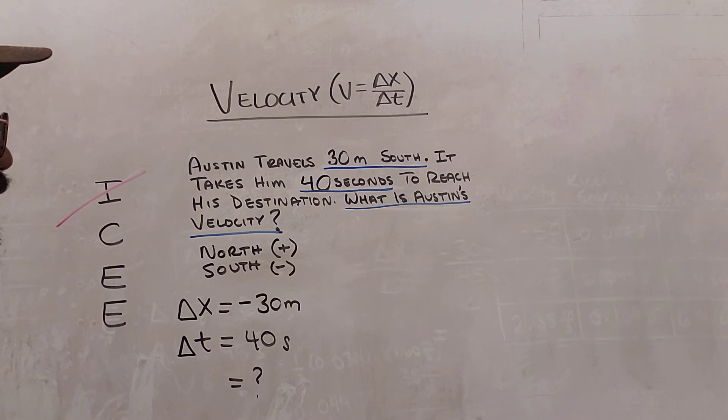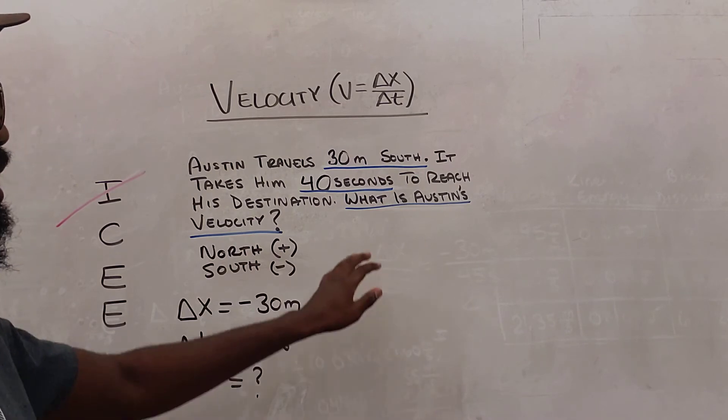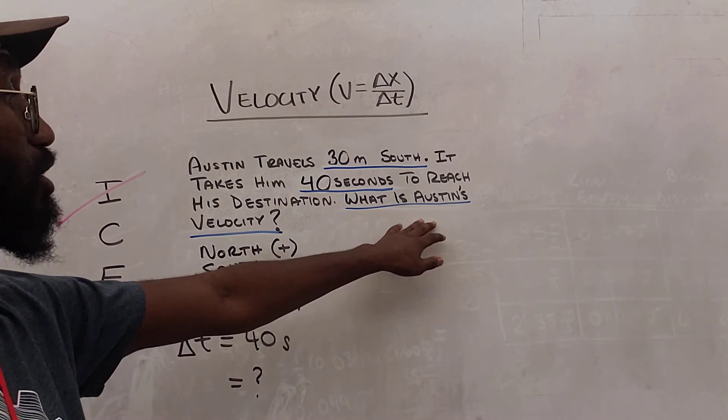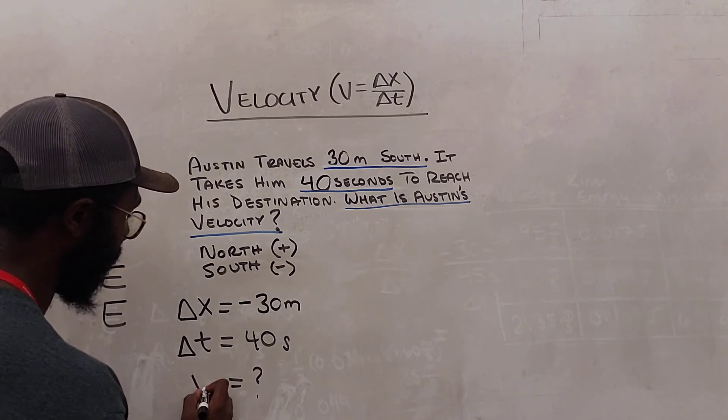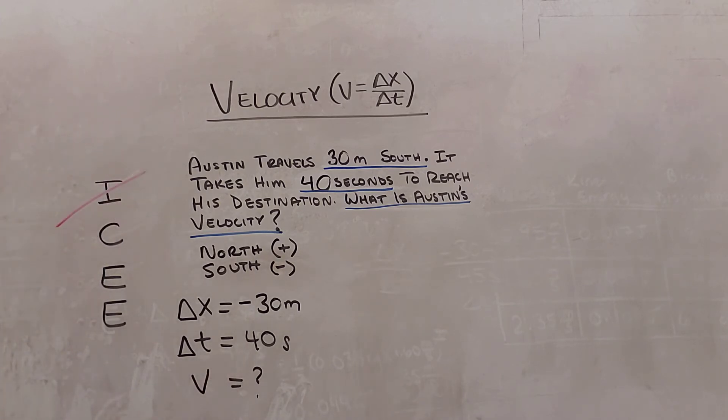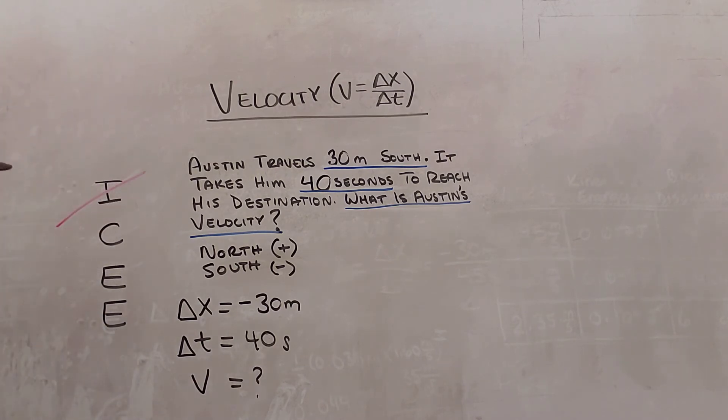Now we're going to look at our question. In order to figure out what category this falls into, we just read the word problem. So the word problem asks us, what is Austin's velocity? So velocity is represented by the variable V. And now we have categorized all of our measurements. So let's go ahead and cross that off the list.